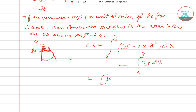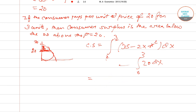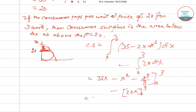We subtract the rectangular area — integration from 0 to 3 of 20 dx — from the area under the demand curve. Evaluating gives us 35x minus x squared minus x cubed over 3, from 0 to 3, minus 20x from 0 to 3.